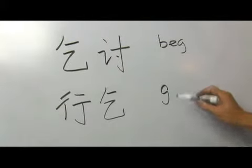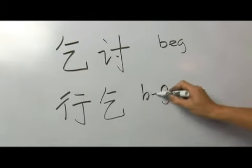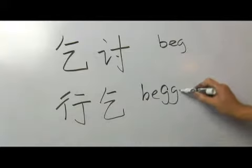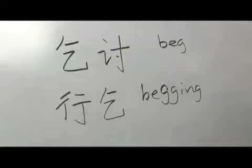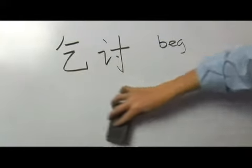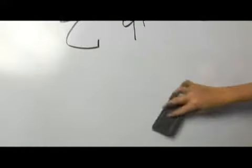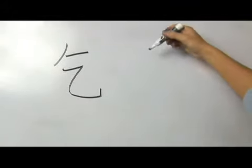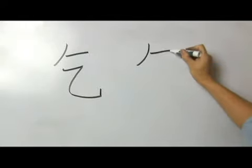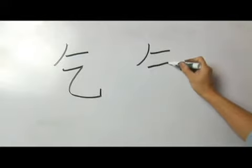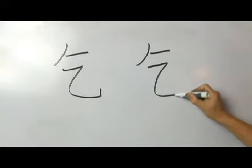That's what the beggars do — qi. Left slant, horizontal, horizontal, bend, bend again, and hook: qi.